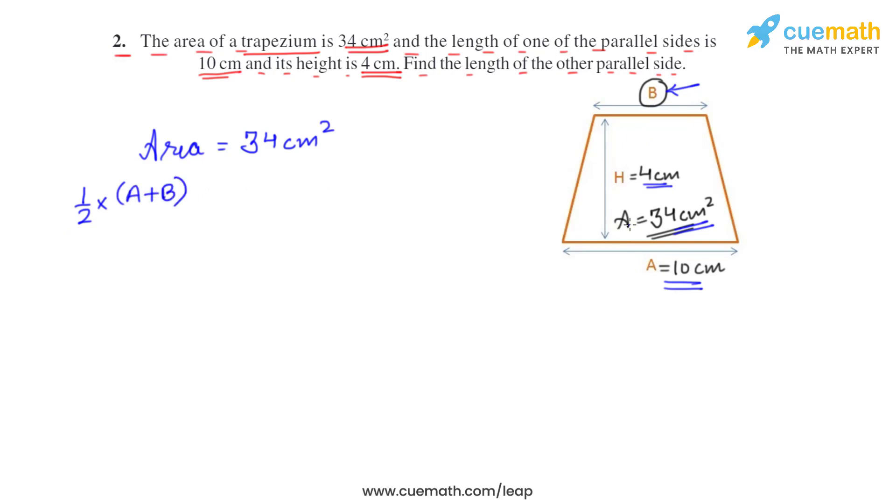Now half into, a is 10, b we have to find, and height is 4 equals 34. Take 1 by 2 and 4 to the other side, they will be reciprocal.